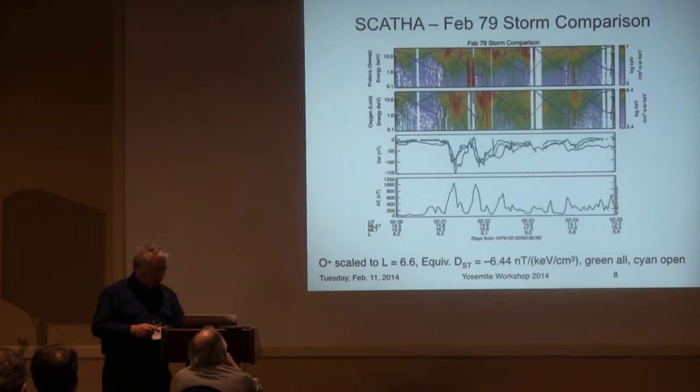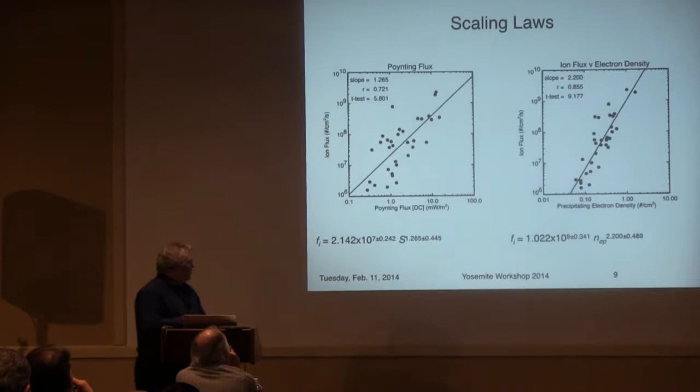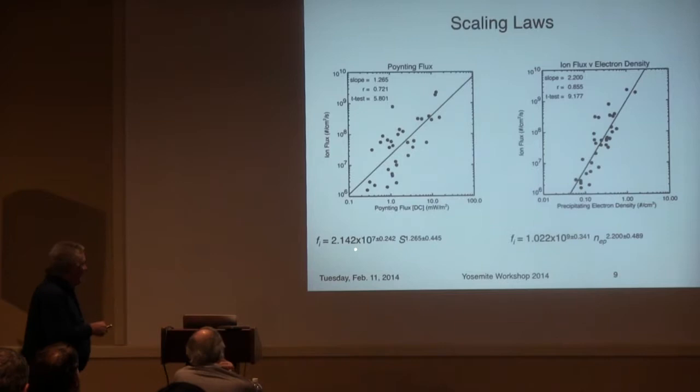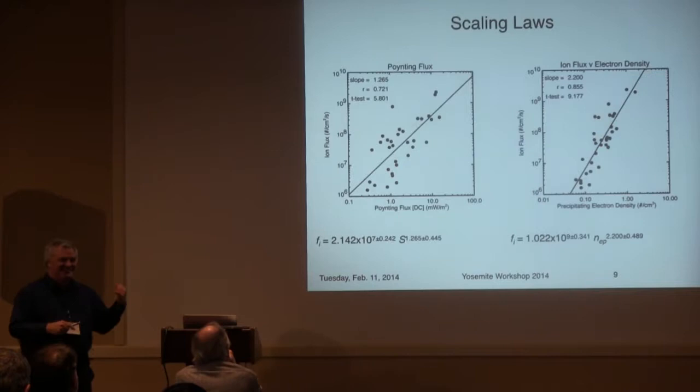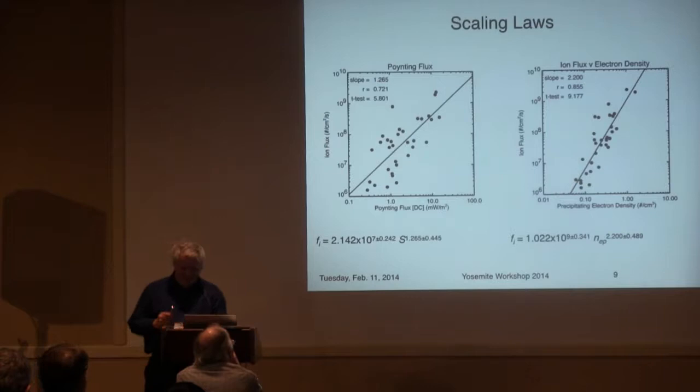Now going to the outflow process — these are the Strangeway et al. 2005 scaling laws. The only lesson I'd have is: don't put too many significant digits on your numbers. Given those uncertainties, that last significant digit is not warranted. So lesson learned for graduate students: truncate your significant digits to where the data tell you it should be.